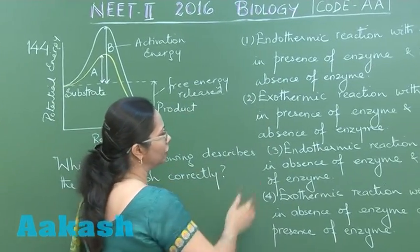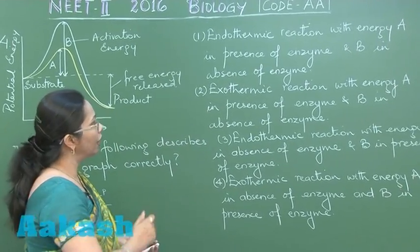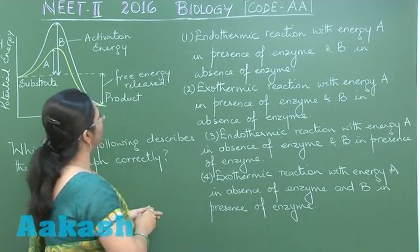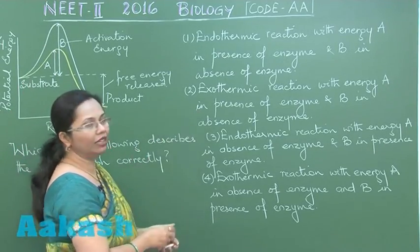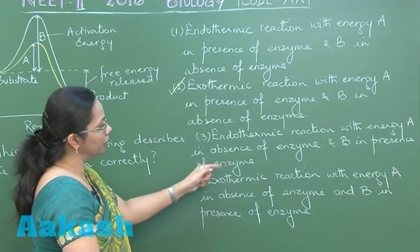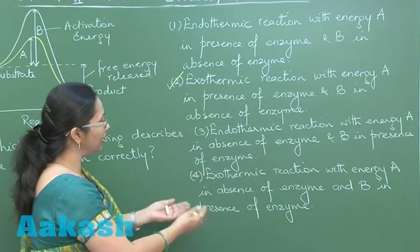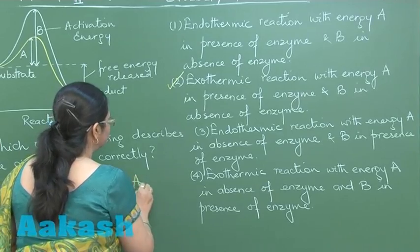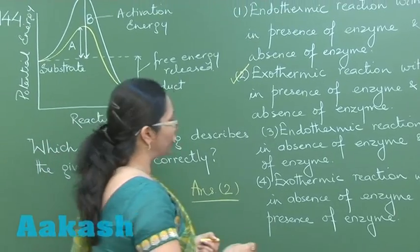Once we see the options here, there are two with endothermic reaction, so we can directly rule them out. The remaining two are exothermic. We can read: exothermic reaction with energy A in the presence of the enzyme and B in the absence of enzyme—this is the correct choice. The fourth choice says exothermic but states B is in the presence of enzyme, which is certainly wrong. Our answer is option number two. Let's move on to the next question 145.